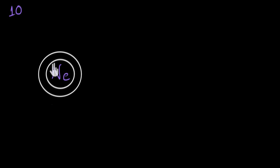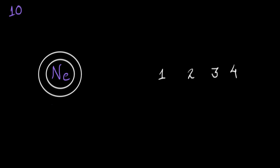Now there could be many shells: one, two, three, four. And we saw that these shells are given special names — KLMN. If you're wondering why these weird names, don't worry about them right now. There is some historical reason and we'll talk about them in a future video.